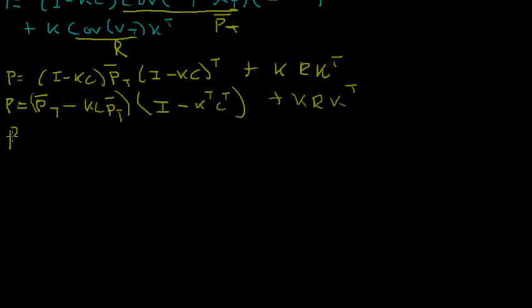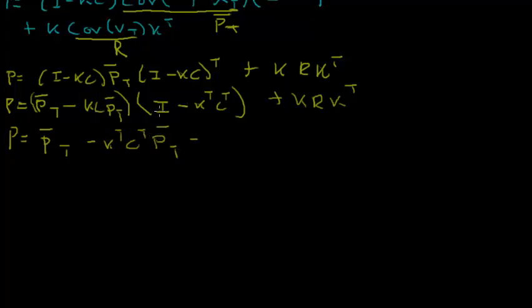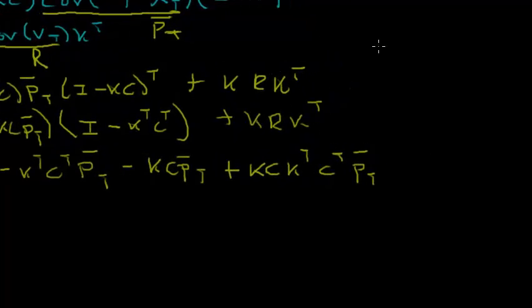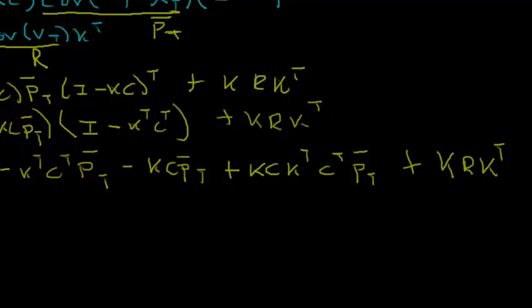Now, how can we group things together? We can factor the last two terms by writing K times (C p_bar C transpose plus R) times K transpose. The term (C p_bar C transpose plus R) is defined as S in the Kalman filter algorithm — just a simplification so we don't have to keep writing it out. So p becomes p_bar(t) minus K transpose C transpose p_bar(t), minus KC p_bar(t), plus KSK transpose.